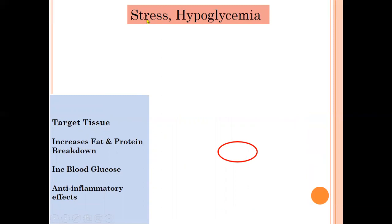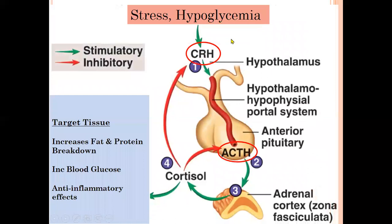Whenever there is stress or hypoglycemia, there is production of corticotropin-releasing hormone (CRH) from the hypothalamus. This leads to production of ACTH via the hypothalamo-hypophysioportal system, which then directly acts on the adrenal cortex to produce cortisol.